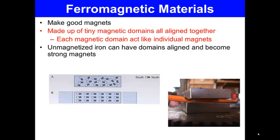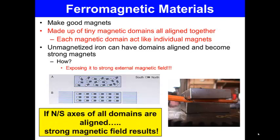Unmagnetized iron can have its domains aligned and become a strong magnet. How is that possible? By exposing it to strong external magnetic fields. If the north-south axes of all domains are aligned — so the north and south of all those little parcels of iron are aligned — a strong magnetic field results.